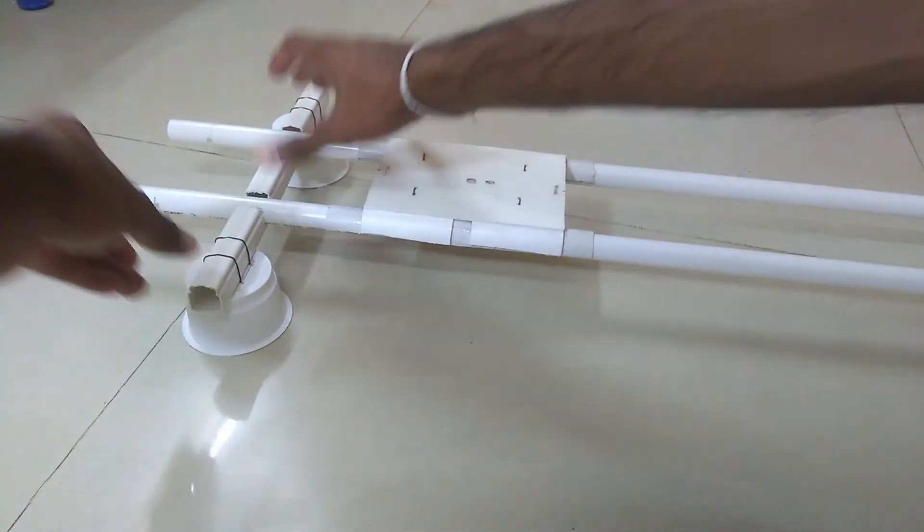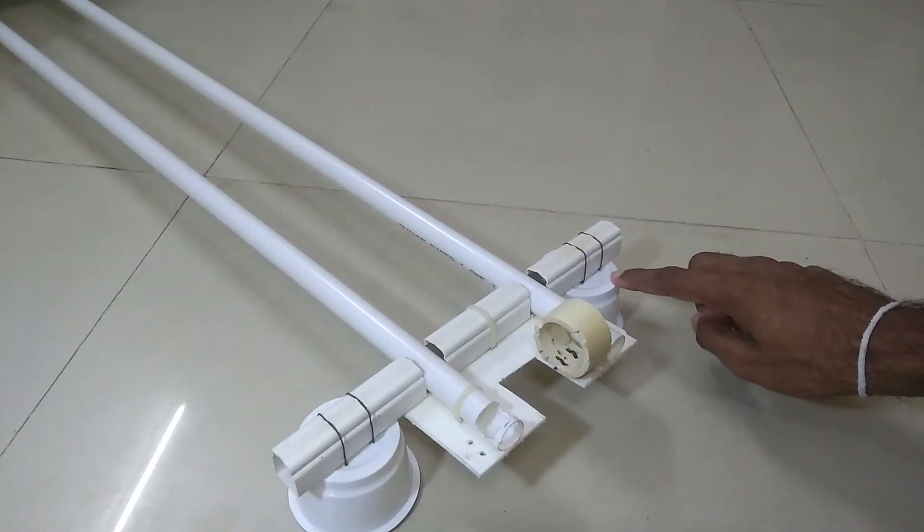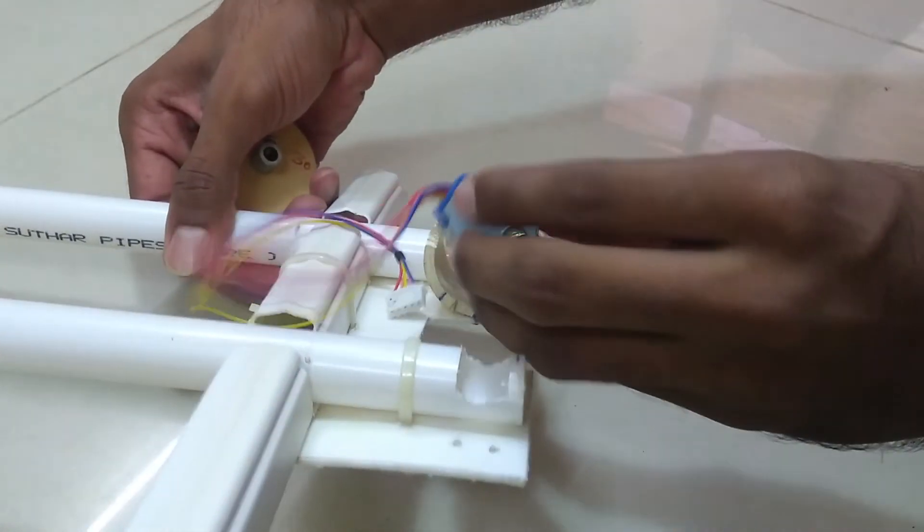Then I fixed 4 jam caps at each corner in order to increase the height of the structure from the ground. Now fix the stepper motor to the structure.